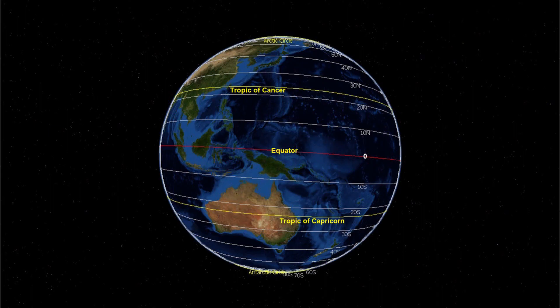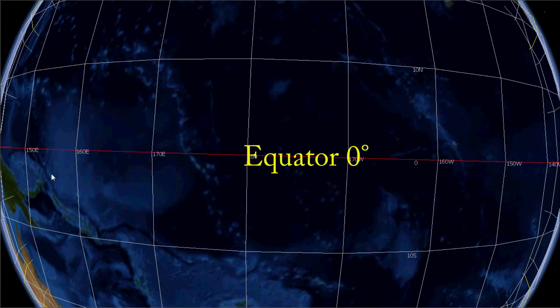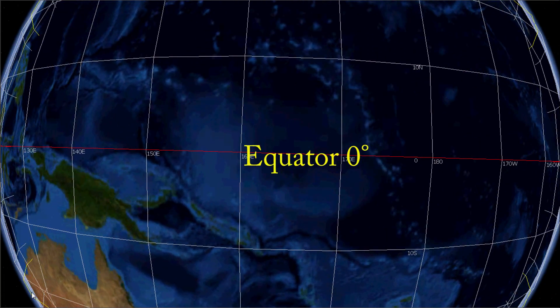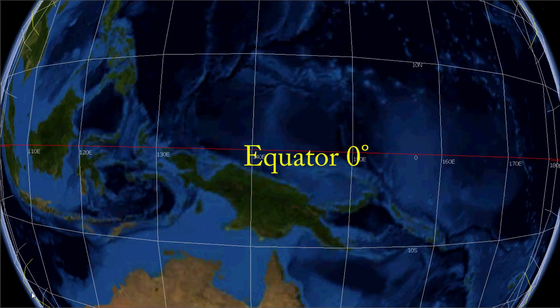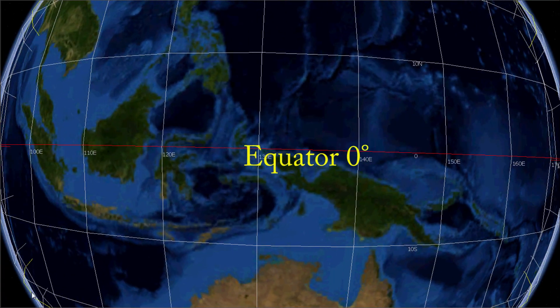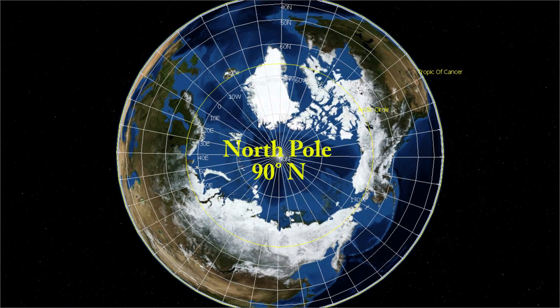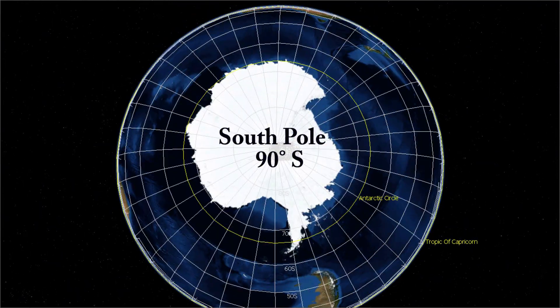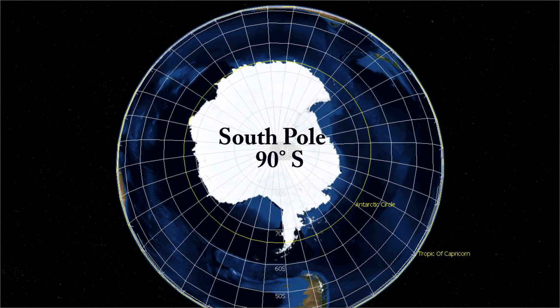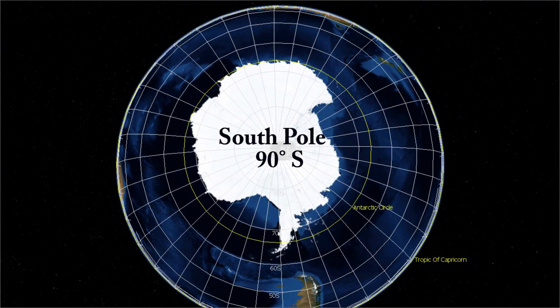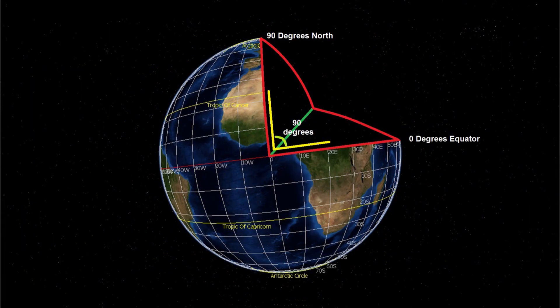Lines of latitude, also known as parallels, are read in terms of north and south of the equator. The starting point is the equator, which is zero degrees latitude. 90 degrees north of the equator is the north pole, and 90 degrees south of the equator is the south pole. Note that the poles are at a 90 degree angle from the equator.